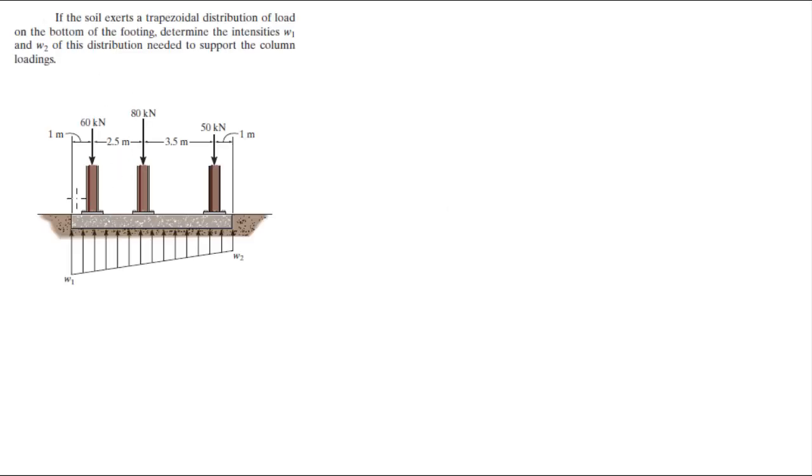Alright guys, we have this diagram which has three forces applied at the top and a distributed load applied at the bottom. If the soil exerts a trapezoidal distribution of load on the bottom of the footing, determine the intensities of W1 and W2 of the distribution to support the column loadings.